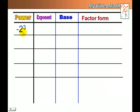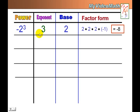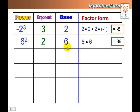Let's take more examples. Negative 2 to the third power: the exponent is 3 and the base is 2 with a negative, times negative 1, so the answer is negative 8. 6 squared: the exponent is 2, the base is 6, and 6 times 6 equals 36.